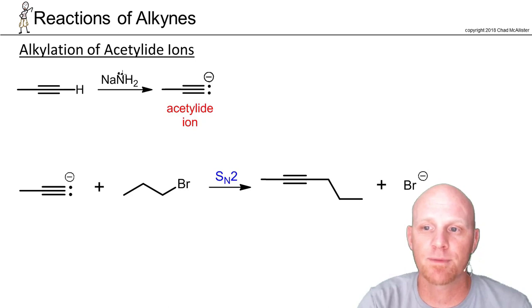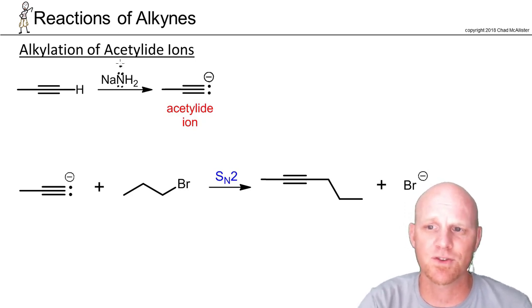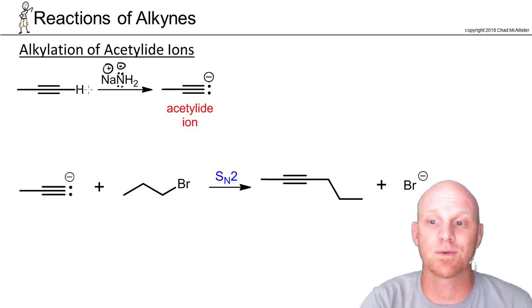You might recall from the beginning of this chapter we talked about terminal alkynes being a little more acidic than both alkenes and alkanes. Actually they're a lot more acidic, but they're still not the most acidic things in the world. But in this case, sodium amide was our new favorite strong base that was able to deprotonate them.